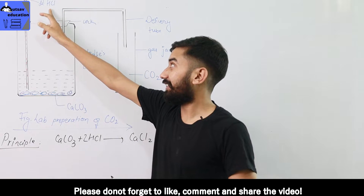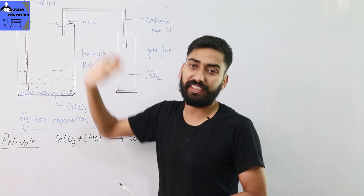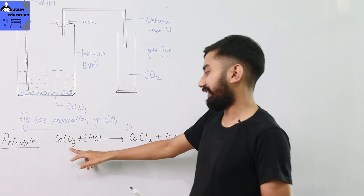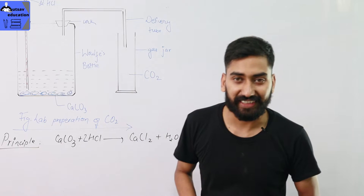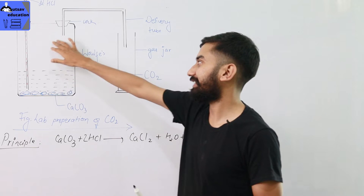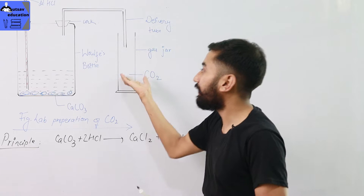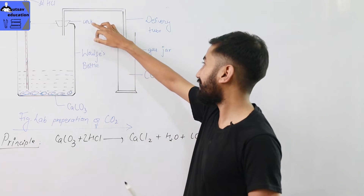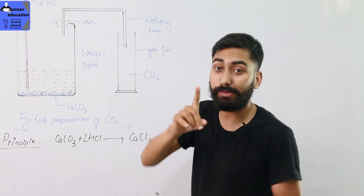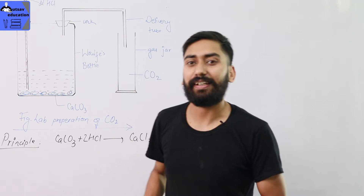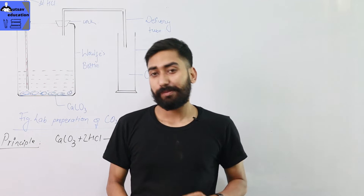Dilute hydrochloric acid is poured into the Woulff bottle containing calcium carbonate through the thistle funnel as shown in the figure. The calcium carbonate reacts with dilute HCl to give calcium chloride, water, and carbon dioxide. The gas is collected into the gas jar through the delivery tube by upward displacement of air, since carbon dioxide is heavier than air.